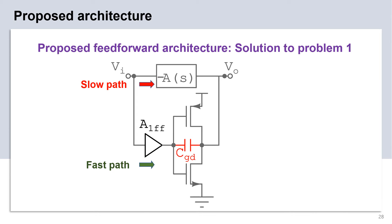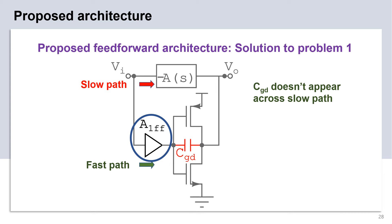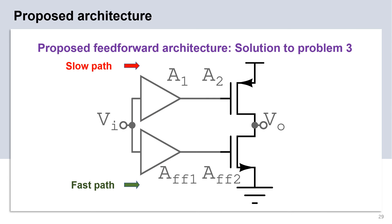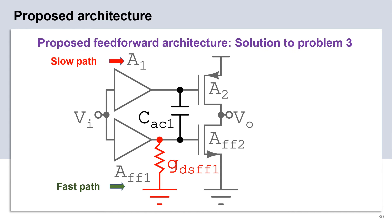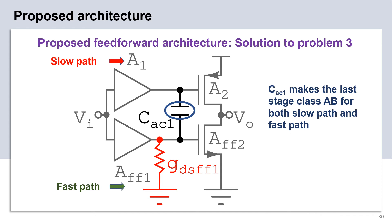Let us now see how the proposed architecture tackles the problems stated so far. Earlier, we saw that the parasitic CGD appears directly across the slow path, which causes it to be amplified by the Miller factor. This problem can be mitigated by using a buffer or a low-gain pre-amplifier with a bandwidth larger than the UGB of the loop. Since this buffer will be driving capacitance that is much smaller than the load capacitance, it does not impose a design constraint. An added benefit is that the fast path transconductance is amplified by the pre-amplifier gain A1FF, which effectively boosts the UGB by A1FF. Earlier, we saw that sharing the last stage between the slow and the fast path is power efficient but comes at the loss of class AB operation. This problem can be solved by adding a coupling capacitor CAC1 as shown in the slide. This makes the last stage class AB for both the slow as well as the fast paths.